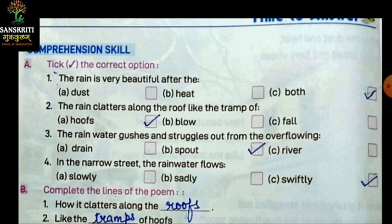Next is: the rain clatters along the roof like the tramp of — jho baarish ki khat khat aati hai roof par, voh kaisi lagti hai tramp of — hoops, blow ya phir fall? Hoops ki tarah. Toh hum hoops par tick karenge.